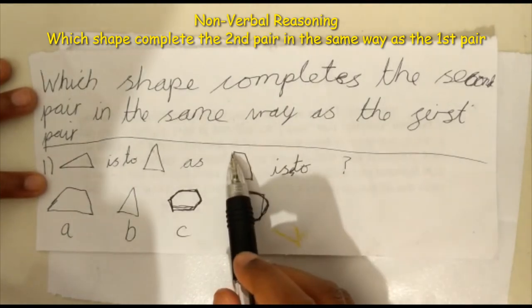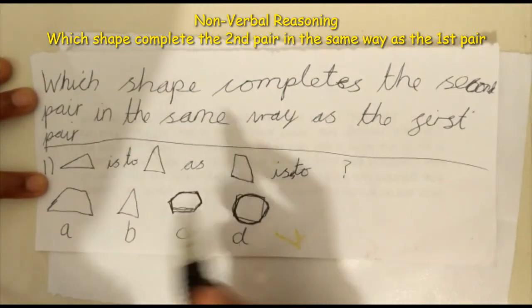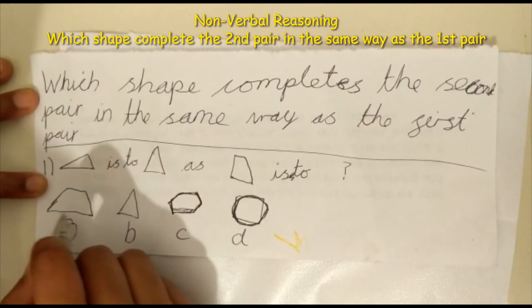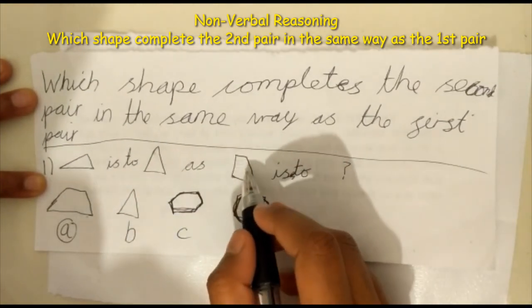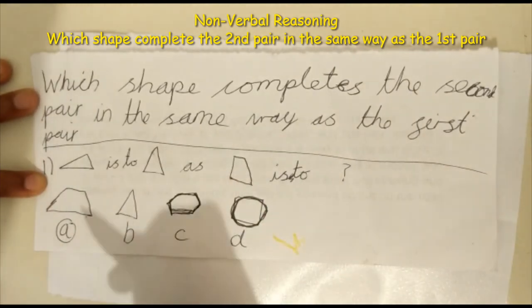And here we need to find a shape with four sides. So we know the answer is A because this shape has four sides, and this shape has four sides too. So the answer is A.